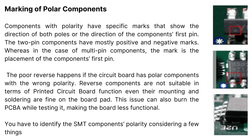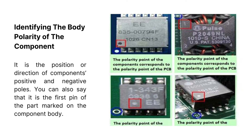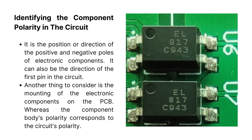This issue can burn the PCBA while testing it, making the board less functional. Identifying body polarity means the position or direction of the component's positive and negative poles — or the first pin marked on the component body. Identifying component polarity in the circuit refers to the position or direction of the positive and negative poles of electronic components, or the direction of the first pin in the circuit.